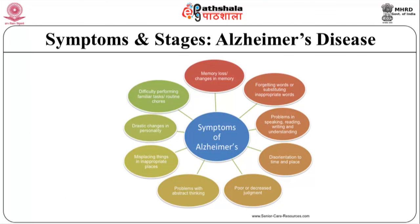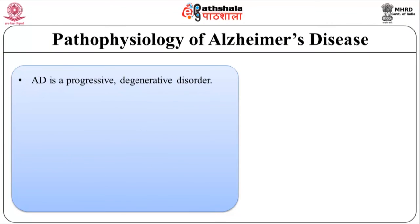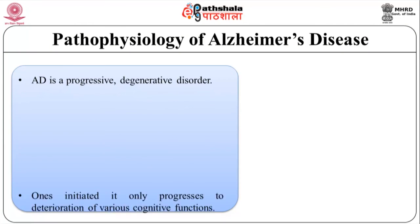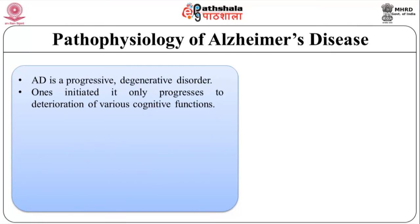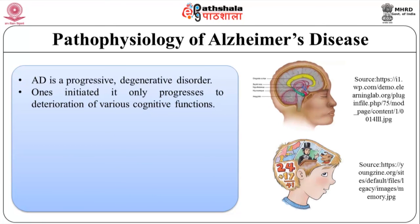The figure shows the list of different symptoms which occur due to Alzheimer's disease, i.e. memory loss, forgetting words, problems in speaking, reading or writing, disorientation to time and place, poor judgment, etc. Pathophysiology of Alzheimer's disease: Alzheimer's disease is a progressive degenerating disorder. Once initiated, it only progresses to deterioration of various cognitive functions.